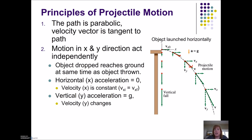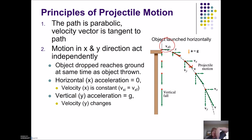We're going to compare an object launched to an object dropped. What you will see is the one that's dropped reaches the ground at the same time as an object launched horizontally. That's because if an object is launched horizontally, all of its initial velocity is in the x direction. There is zero velocity in the y direction initially, just like something that's been dropped. So it's going to gain y velocity at the same rate as something dropped because in the y direction, both of those motions are being controlled by the acceleration due to gravity.